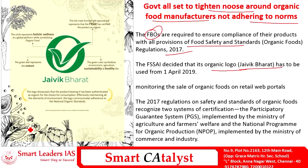Under the Jaivik Bharat initiative, the government has spoken about two certification systems. The first is the Participatory Guarantee System under the Ministry of Agriculture and Farmers Welfare. The second is the National Programme for Organic Production, which is more focused on export and value addition of agri products, falling under the Ministry of Commerce and Industry. With the recently introduced Agri Export Policy targeting an increase in agricultural exports from 30 billion to 60 billion US dollars, it is important for India to focus more on organic products. Thank you.